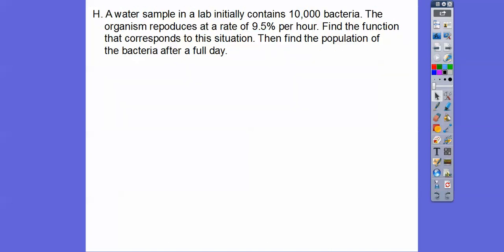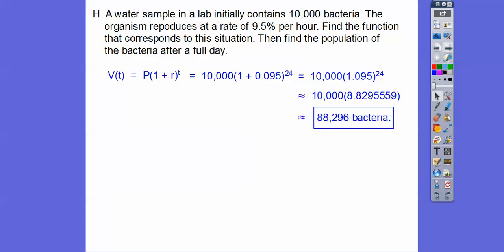A water sample in a lab initially contains 10,000 bacteria. The organism reproduces at a rate of 9.5% per hour. So that's .095. Find the function that corresponds to this situation, and then find the population. So this is going to be one plus r to the t power. After a full day, it's going per hour. So we're going to put in 24 hours in a full day. So that's why that exponent became 24. So we've got to add one plus .095 and then take it to the 24th power. You get that. So I'm getting about 88,296 bacteria after a full day.